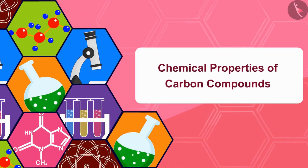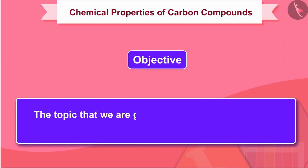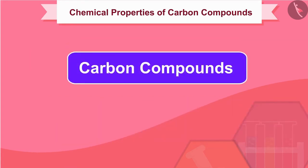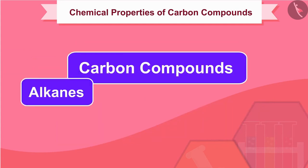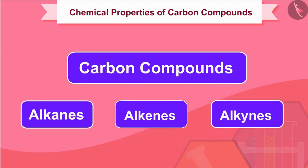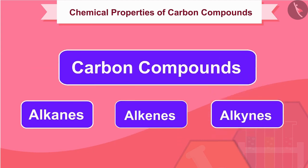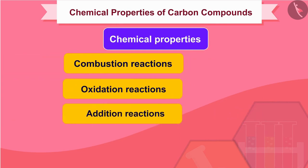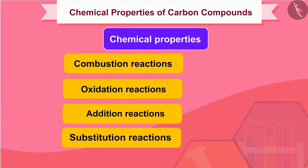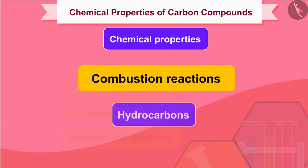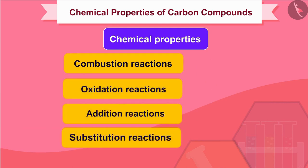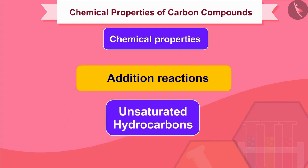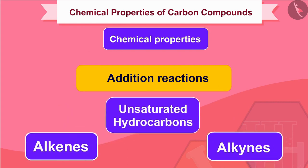Welcome to this video session. The topic that we are going to cover in this session is Chemical Properties of Carbon Compounds. The most common carbon compounds are hydrocarbons — alkanes, alkenes, and alkynes. The chemical properties we are going to study are combustion reactions, oxidation reactions, addition reactions, and substitution reactions. Substitution occurs only in saturated hydrocarbons, whereas addition reactions are given only by unsaturated hydrocarbons — alkenes and alkynes.